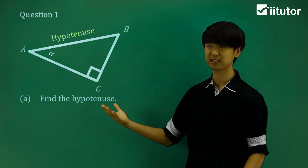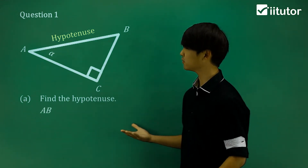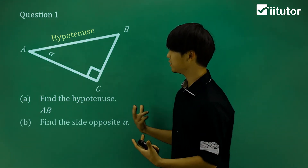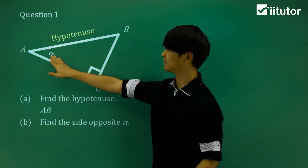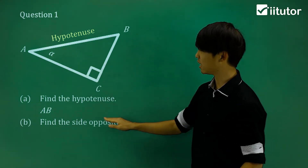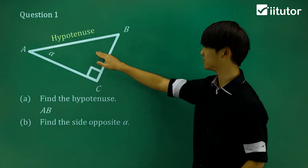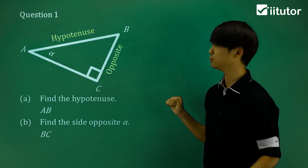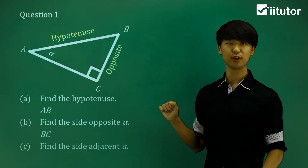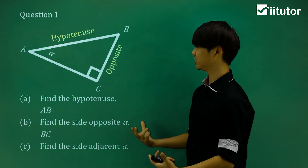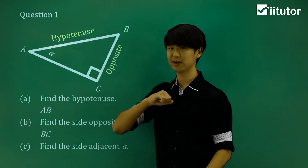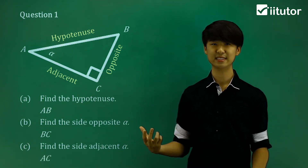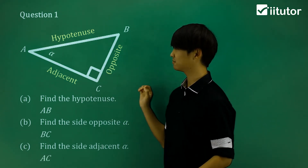To answer the question, the hypotenuse is side AB. Now in part B, we need to find the side opposite to alpha. Alpha is this angle here, so the side opposite to it is BC. And in part C, let's find the side adjacent to alpha — the one right next to it is going to be AC.